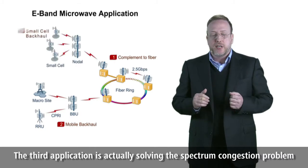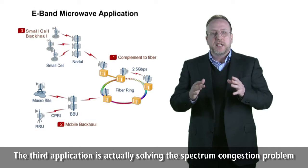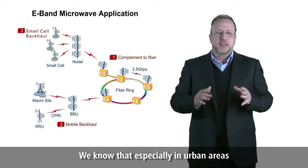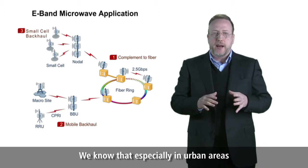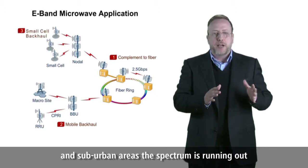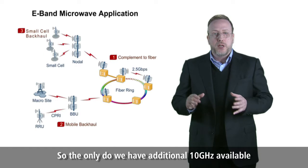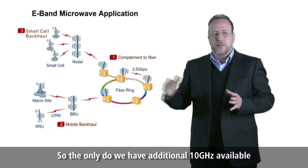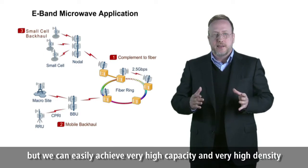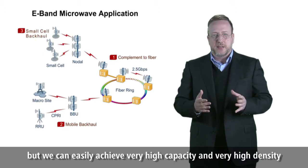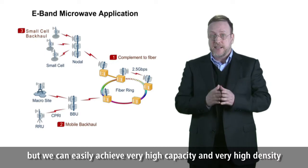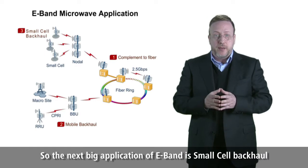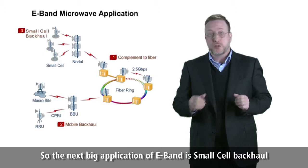The third application is solving the spectrum congestion problem. We know that especially in urban and sub-urban areas the spectrum is running out. Not only do we have an additional 10 GHz available, but we can easily achieve very high capacity and very high density. So the next big application of eBand is small-cell backhaul.